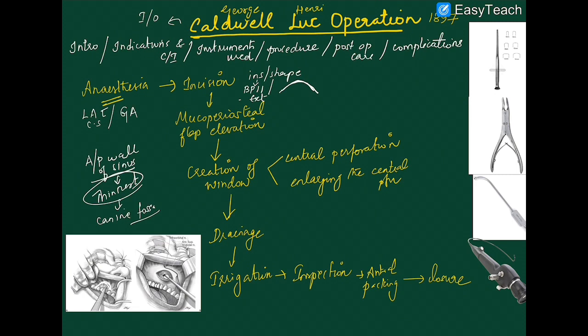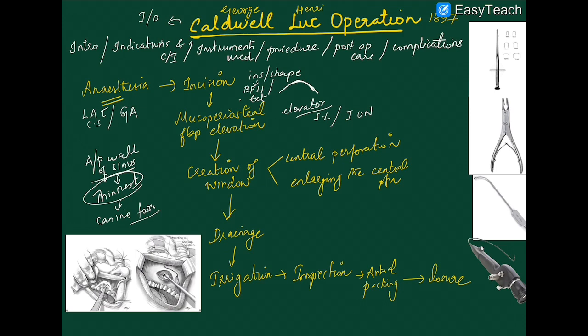After giving the semilunar incision, you will have the mucoperiosteal flap covering the bone. Detach and retract the mucoperiosteal flap using an elevator to visualize the bone. While retracting, always take care not to injure the superior labial branch of the infraorbital nerve, which is near the canine fossa and supplies part of the upper lip, cheek, and facial skin on that side.